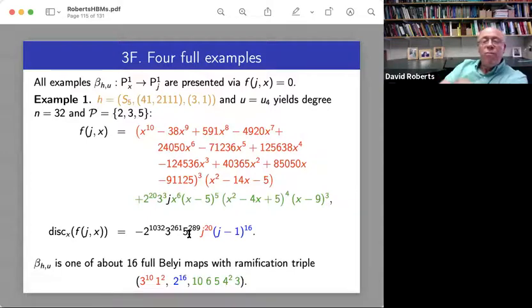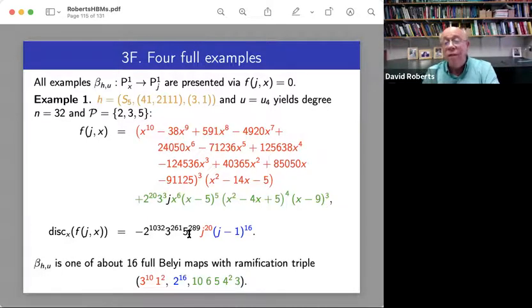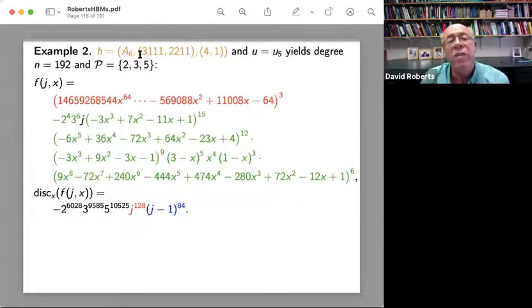And we could set this equal to zero and solve for J. And this would be a degree 32 map. And we could take the discriminant of this and it would sort of factor. And so there we have it. So that's a Hurwitz Belyi map.